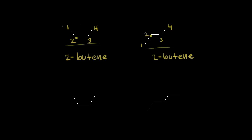If we look at the molecule on the left, we can see we have two methyl groups, and those two methyl groups are on the same side of our double bond. If I draw a line in here, it's easier to see those two methyl groups are on the same side. We call that the cis isomer, so we put 'cis' in front of our name — this would be cis-2-butene.